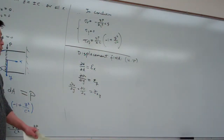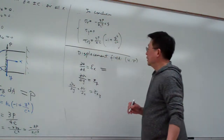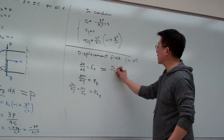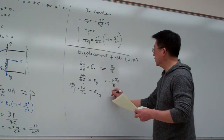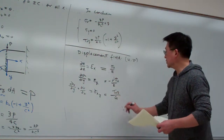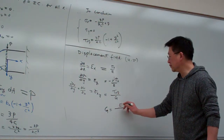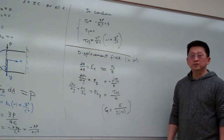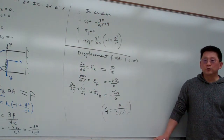So we know to determine the displacement, we start from Hooke's law. Implementing this: epsilon X is sigma X divided by E, epsilon Y is minus nu times sigma X divided by E, and gamma XY is tau XY divided by G. Keep in mind we have the relation G equals E divided by 2(1 plus nu). To save writing, I'll simply keep using G.